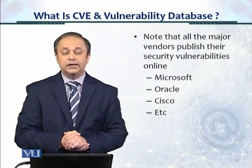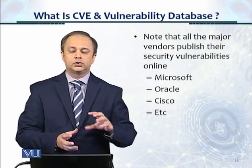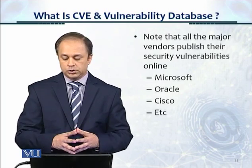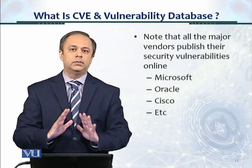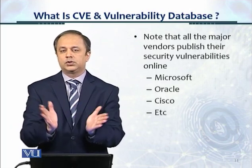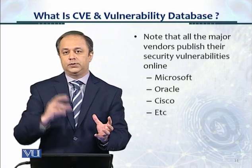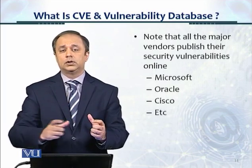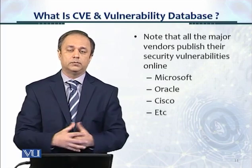All the major vendors also publish their security vulnerabilities online. Other than NVD and US-CERT, vendors like Microsoft, IBM, Oracle, and Cisco all publish their vulnerabilities online. This is one of the reasons why it's so complex — you have to look in multiple places. To get further details, you have to go back to the vendor website, and they usually give good guidance on how to fix that vulnerability. We should always be looking at vendor websites while researching about a vulnerability.